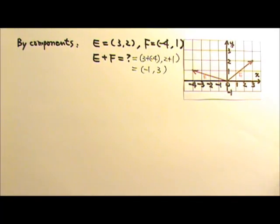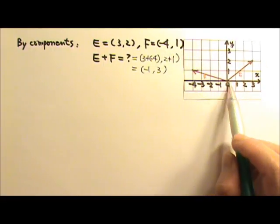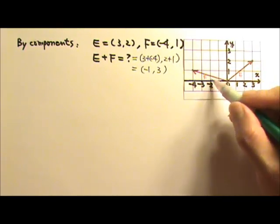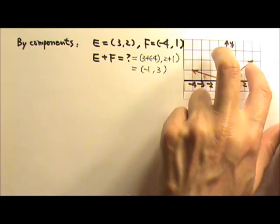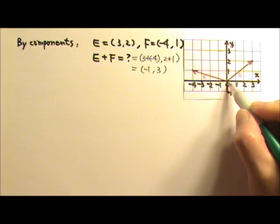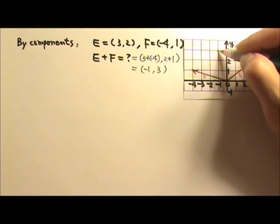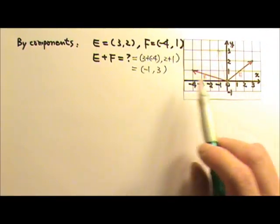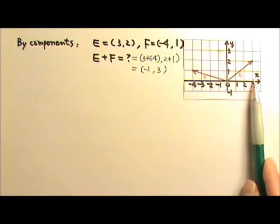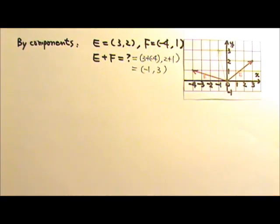The reason this works: vector E is (3, 2), going that way; vector F is (negative 4, 1). If I copy F down and place it at the tip of E using tail-to-tip, I start here and end there, so the sum goes that way — that's negative 1, 3. In the X direction, I start with 3 then add negative 4, arriving at negative 1. That's why adding components works.